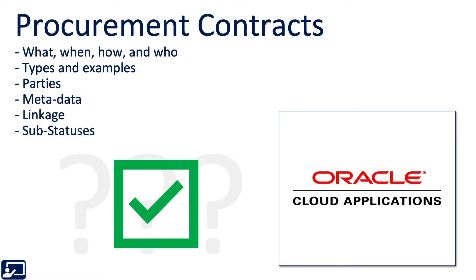You should now be able to understand the what, when, how, and who related to contracts and authoring and creation. You should understand some types and examples, the parties, the metadata, the linkage, and this idea of sub-statuses.